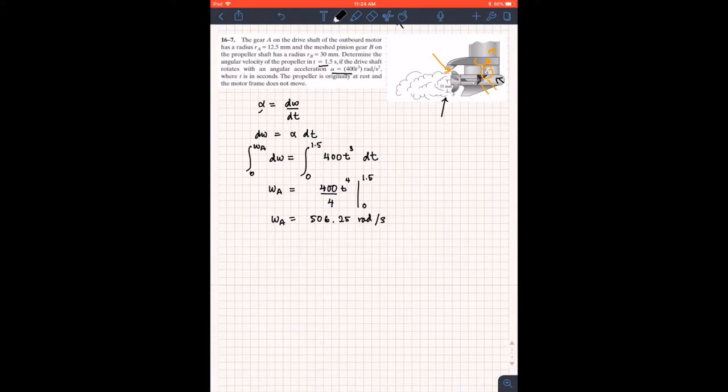Using the ratio of gears we have ωₐ times the radius of A equals to ωᵦ times the radius of B. So if we have ωᵦ automatically we can get the angular velocity of the propeller. In this case let's rearrange this equation to solve for ωᵦ. Here we have ωᵦ = ωₐ × rₐ / rᵦ.